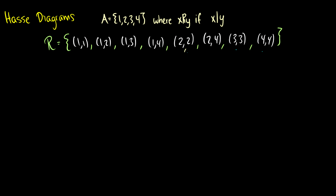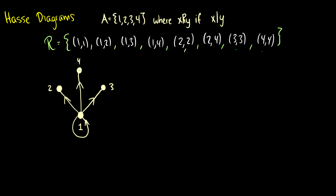So how do we represent this? We give each element a point. We'll have one, two over here, three right here, and four up here. We draw arrows with our relations: one goes to one, one goes to two, one goes to three, one goes to four, two goes to two, three goes to three, four goes to four, and two goes to four. So we have this diagram here, and it's pretty messy.